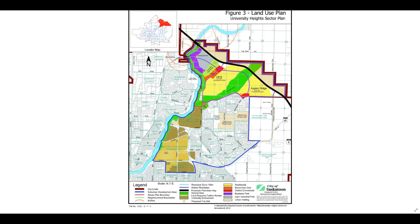Currently, the University Heights Sector Plan has errors around the chemical buffer for land use, and also putting the bridge right through the buffer itself became a problem, because now you have walking paths and things to the Midwestern Trail that are connected to it.